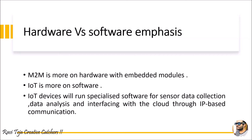Regarding hardware versus software emphasis: M2M is more focused on hardware — embedded modules, sensors, and controllers — with all processing done at the hardware level. IoT, on the other hand, is more software-oriented. IoT devices run software to collect and analyze sensor data, interface with the cloud using IP-based communication, and store data in cloud storage so it can be processed later to monitor or control operations.